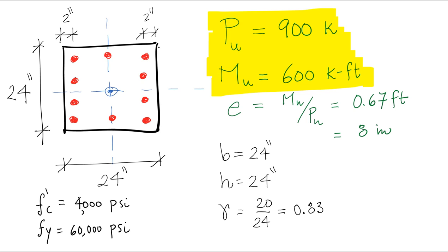From those you can compute an eccentricity, M divided by P. In this case that eccentricity is 8 inches, where the axial load is 900 kips and the moment is 600 kip feet.